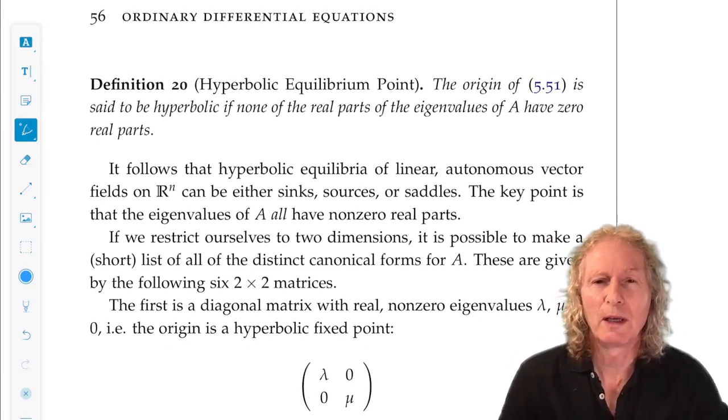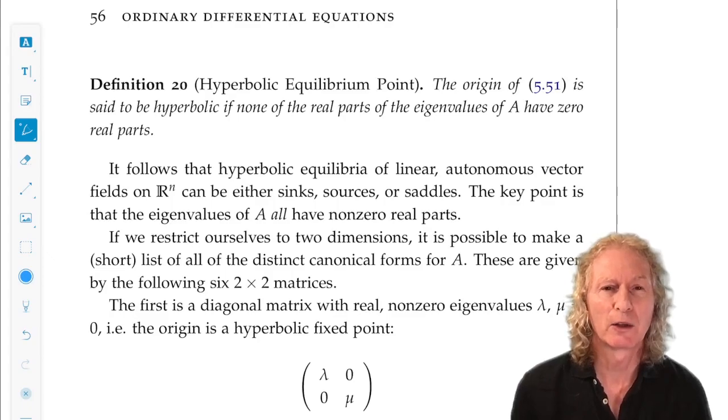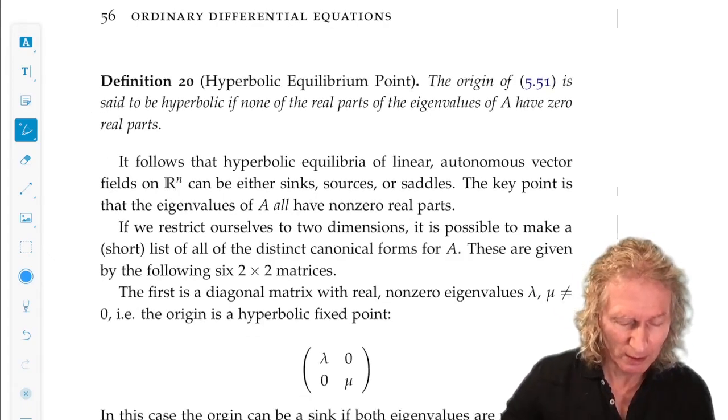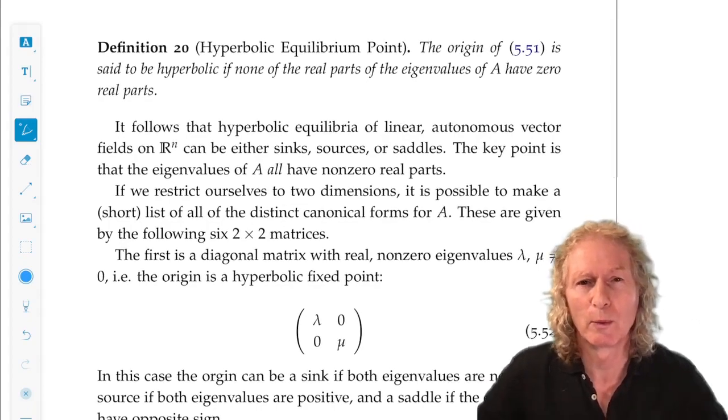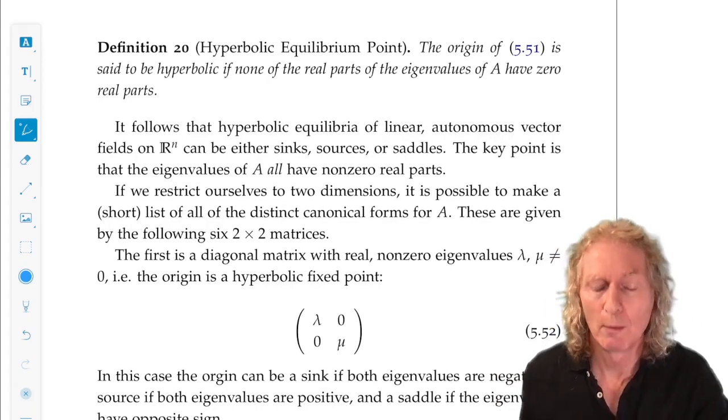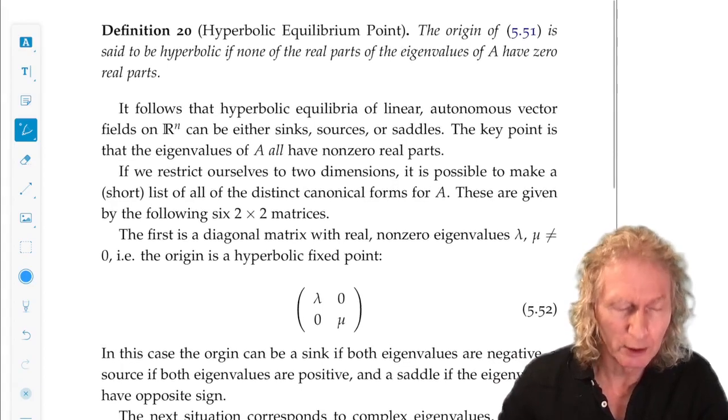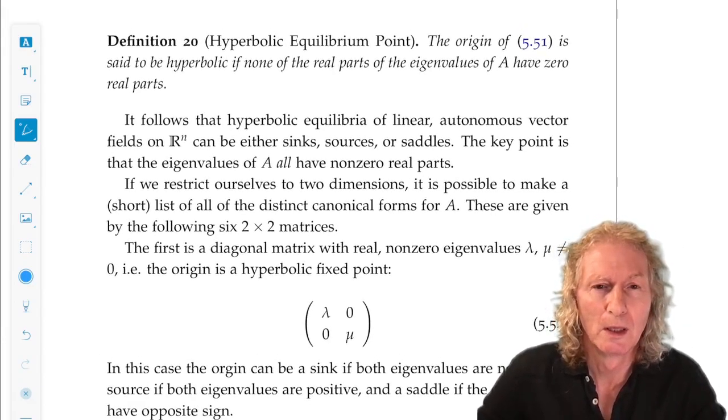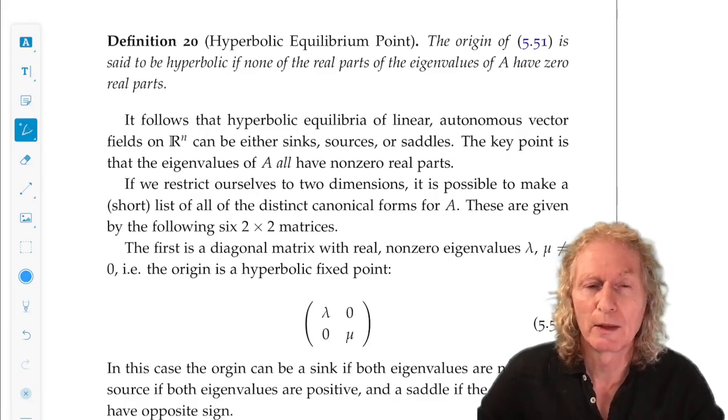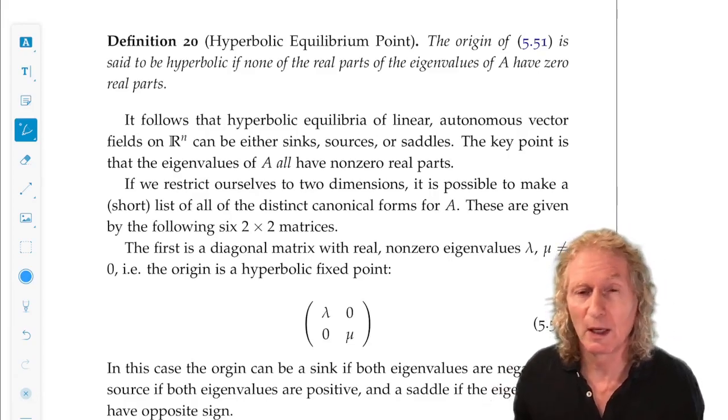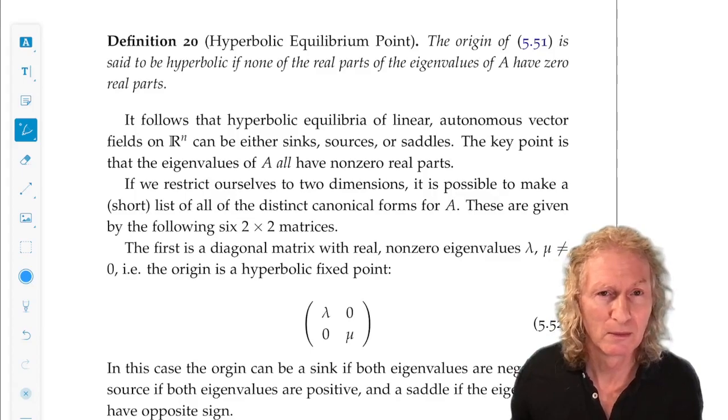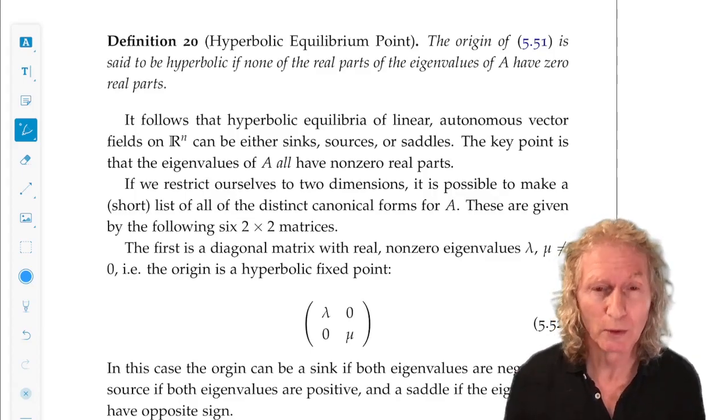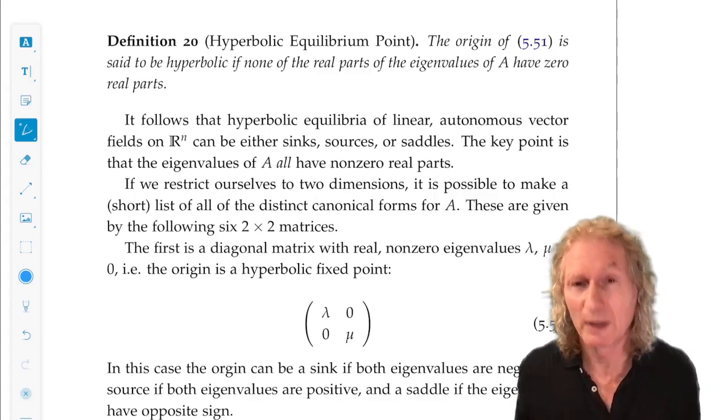So, in the two-by-two case, we can kind of categorize all of the possible situations, and I've done that here. But some additional terminology: remember when we did the saddle, the third example in the last lecture, we had the notion of stable and unstable subspace. For the first example, it was all unstable subspace; all stable in the second one.